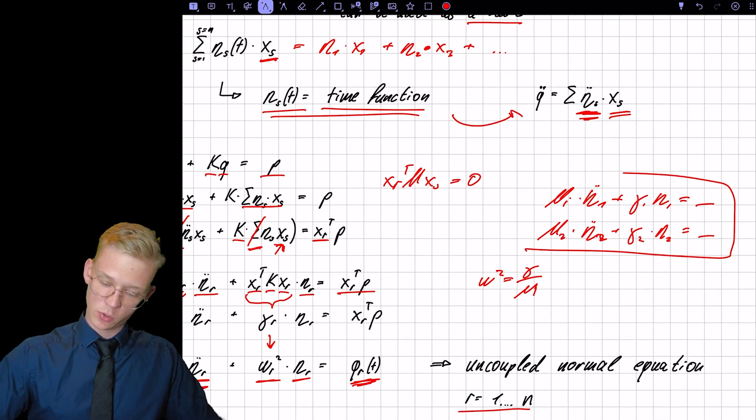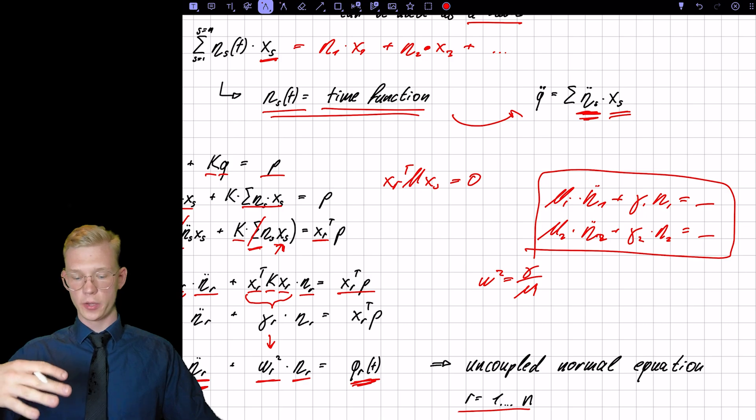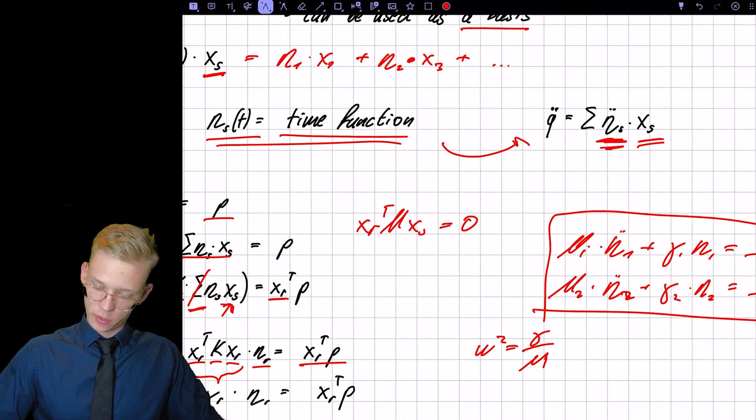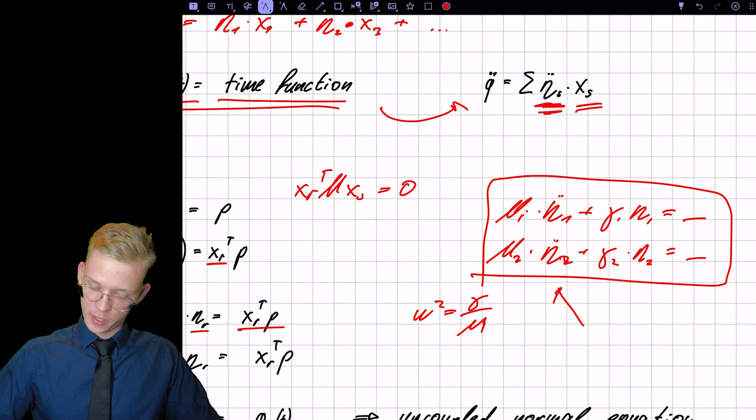And then we have mu2 times eta double dot 2 plus gamma 2 times eta 2 is another thing. So these equations, we can solve them one by one. And after that, after we found or better solved for the etas, so we got our etas,